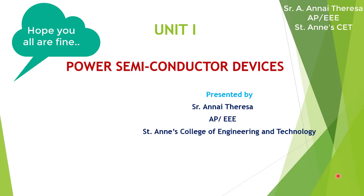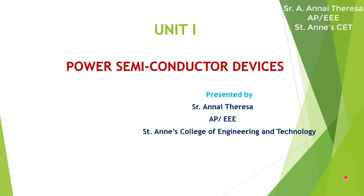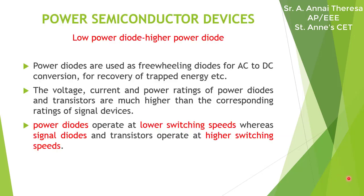We are entering into the first unit: Power Semiconductor Devices. Power semiconductor devices may be low power diode and higher power diode. The low power diode is also called a signal diode, and the higher power diode is also called a power diode. Power diodes play a significant role in power electronics for conversion of electrical power.